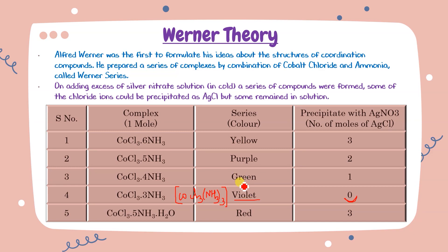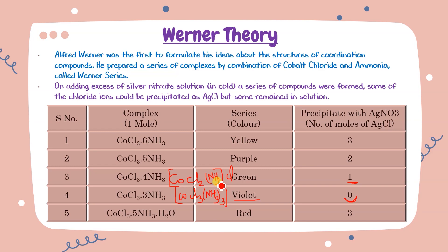For the compound giving one AgCl precipitate, one Cl must be outside the coordination sphere. Structure: [Co(NH₃)₄Cl₂]Cl — one Cl outside (counter ion), two Cl inside, four NH₃ inside. Coordination number six is maintained. For two AgCl moles: [Co(NH₃)₅Cl]Cl₂ — five NH₃ inside, one Cl inside, two Cl outside.